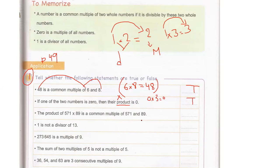The third one: the product of 571 times 89 — the answer of 571 times 89, whatever it is, we call it the product. Is it a common multiple of 571 and 89? Yes. Why? Because the answer is in table 89 and in table 571 — it's in both tables. So we can say the product is a common multiple of 89 and 571.